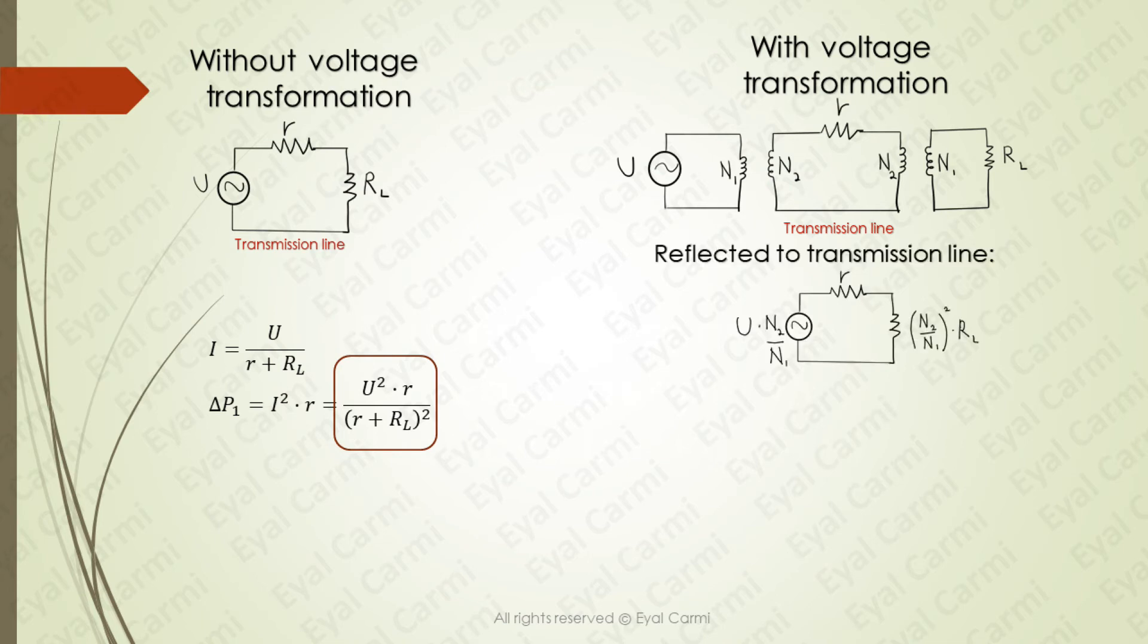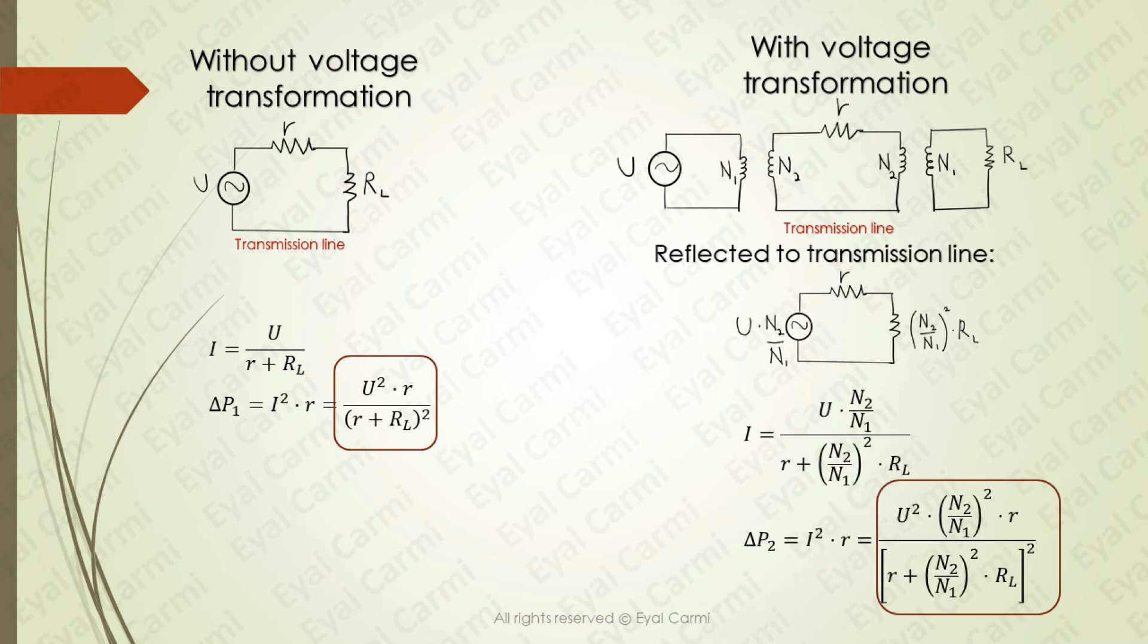The power loss of the circuit with voltage transformation will be referred as delta P2 and analyzed now. First, we need to reflect everything to the transmission line. That is, the voltage U is reflected as U times N2 divided by N1. The load is reflected to the transmission line as N2 divided by N1 squared times RL.